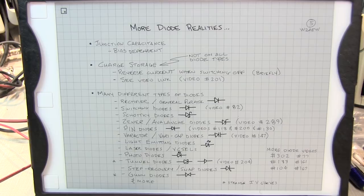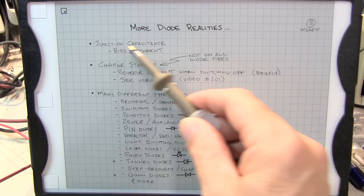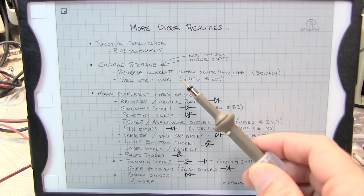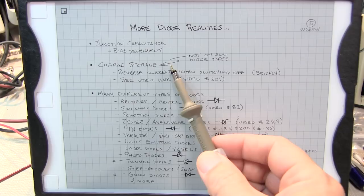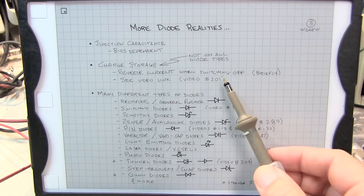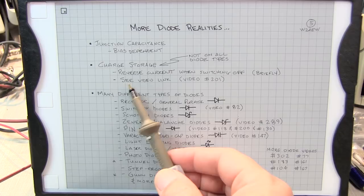Here are a couple more diode realities. The diode junction, the PN junction, has some capacitance and that capacitance is bias dependent. We'll talk about that in a moment. Also the diode junction stores charge and not on all diode types but on most. What that means is that if you have a forward bias diode and then you quickly reverse bias it you'll get some reverse current flow until that stored charge is removed. You'll get that flow kind of briefly. That's called the reverse recovery. And there's actually a video on that, video number 201. Again see the links down below.